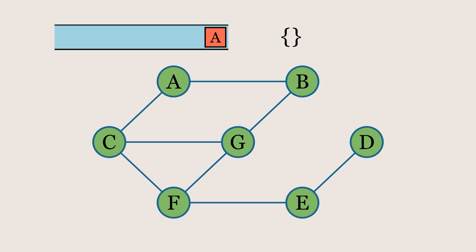Now, a while loop will run as long as the queue is not empty. First, we remove the leftmost element from the queue and check if it has already been visited. If not, we add it to the visited set, print its value, and mark it in orange to visually indicate that the node has been visited.